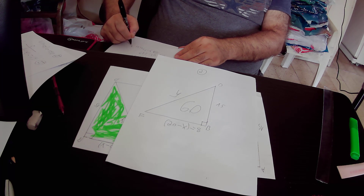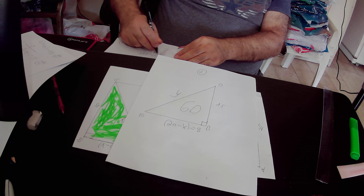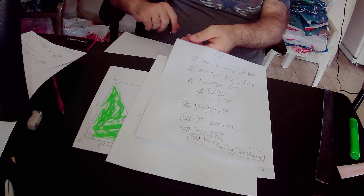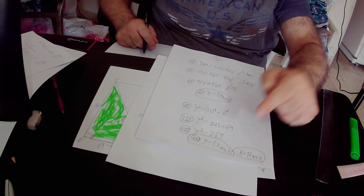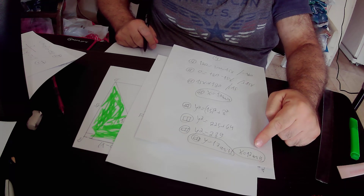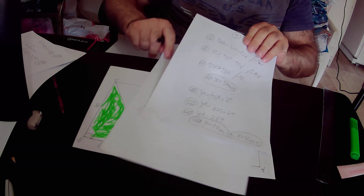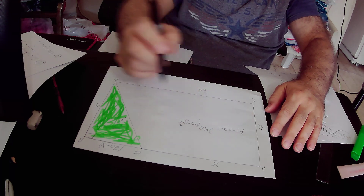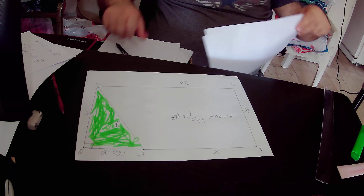We have already found that x equals 12 units. The root of 289 is 17, so the value of y is 17 units. The answer to the question is that the value of x is 12 units and the value of y is 17 units.